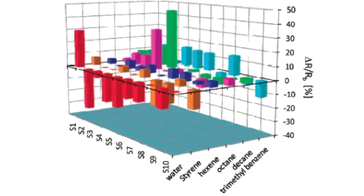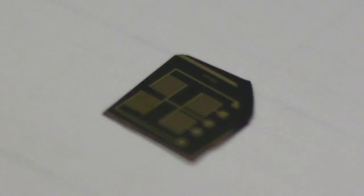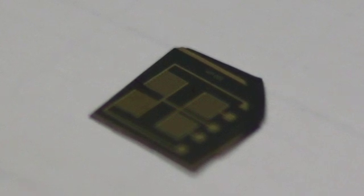We work with a sensor array instead of a single sensor because the many measurements of the array allows us to not only detect the gas but also distinguish between the gases. A sensor array is therefore selective.